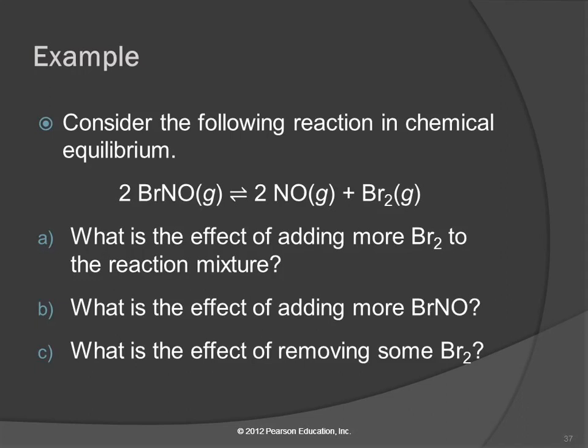So here's an example. Consider the following reaction, which is in chemical equilibrium. What would be the effect of adding more bromine to the reaction mixture? So if we take this guy and we increase the concentration of bromine by adding some, is the reaction going to shift to the left or to the right? It's going to shift to the left because it wants to undo what we did.